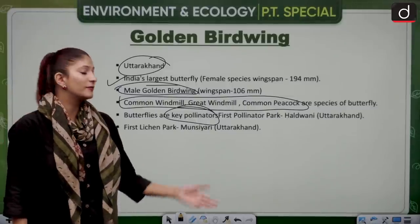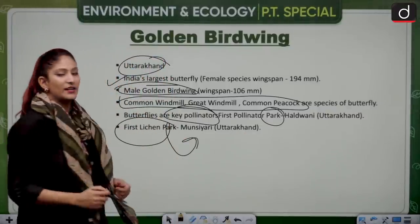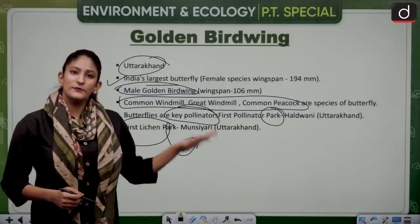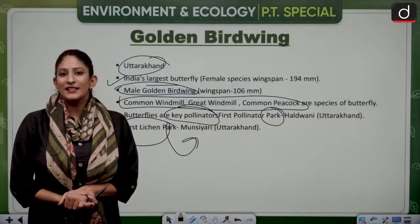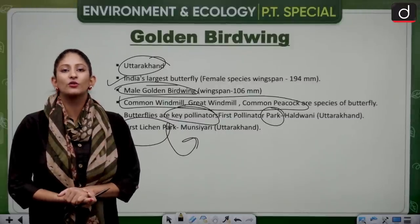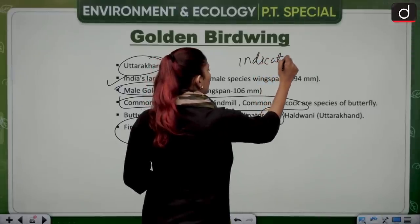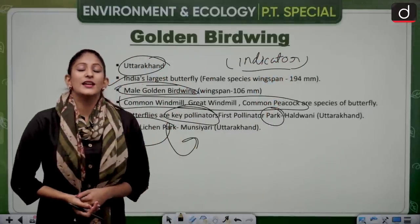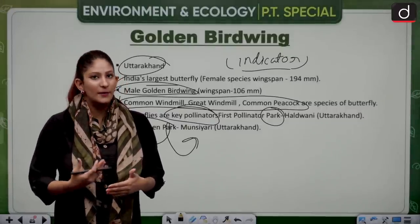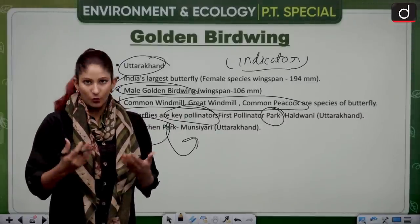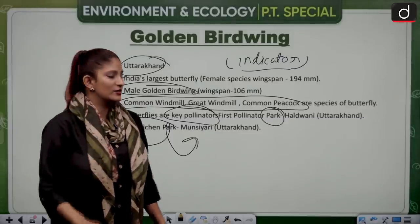The first pollinator park is found in Haldwani, Uttarakhand, formulated specifically for butterflies. The first lichen park is in Munsiari, Uttarakhand. Lichens are a type of algae that grow on walls, floors, and rocks — they are an indicator species. Indicator species are those whose behavior and adaptive behavior changes with changes in the environment. Examples include corals and lichen itself — if there is more pollution, the growth of lichens will be hindered.